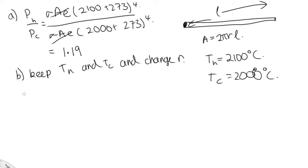So now we want Ph/Pc - we want them to emit the same amount of power, so we want this to be equal to 1. So this is equal to σA of the hot one, E, and this temperature hasn't changed, so it's (2100 + 273)^4 over σ, the surface area of the cold one. That's 2000.